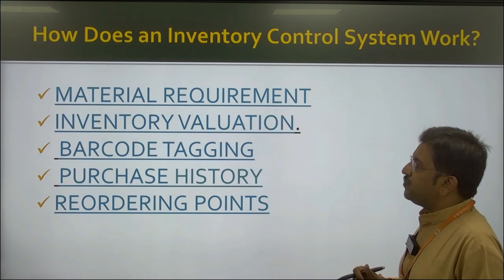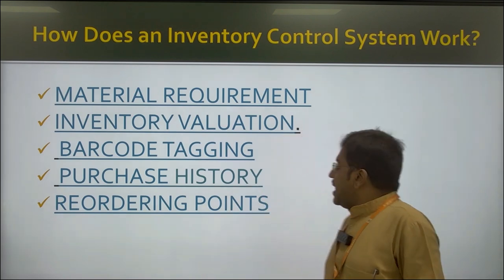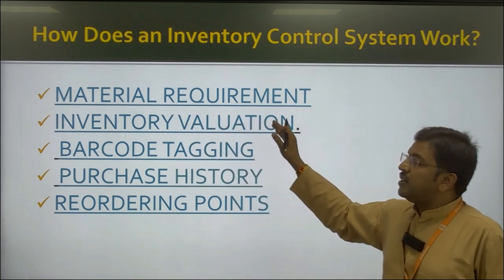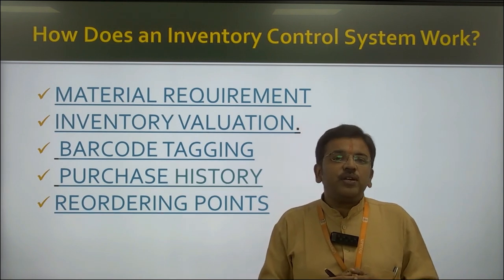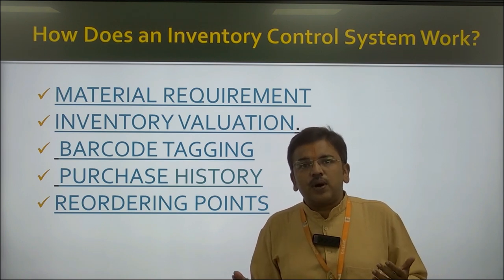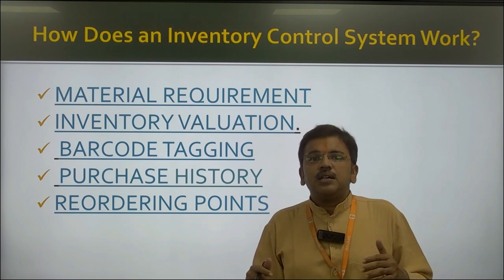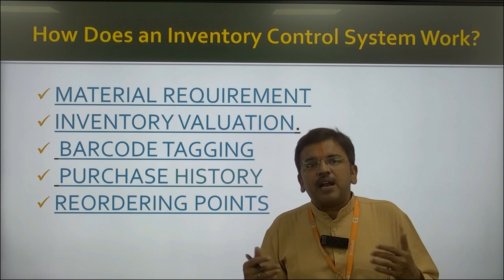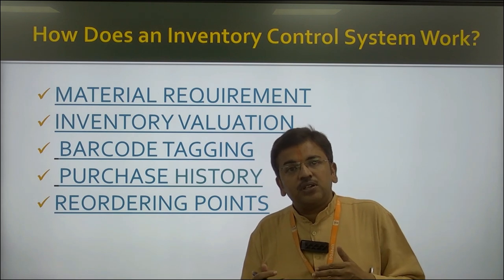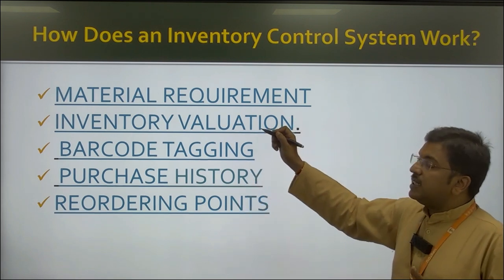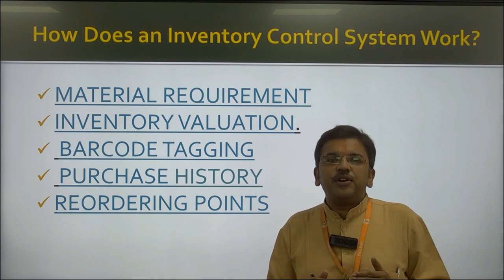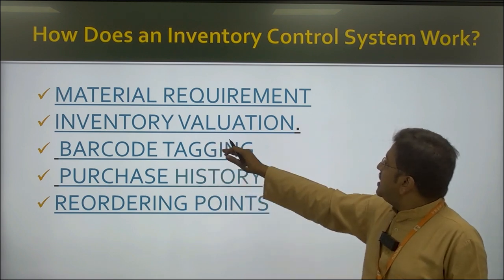How does an inventory control system work? It is a big system. The first component is material requirement — what type of material is needed. For example, when constructing a house you require bricks, stone, sand, tiles, and cement. These are the common components for any construction. On the basis of quality and handling of the material you order it. The second is inventory valuation — the cost of cement is more than sand, and bricks are of average cost. So whenever we buy inventory, valuation is very important. The product with higher value must be given more care than one with less cost.